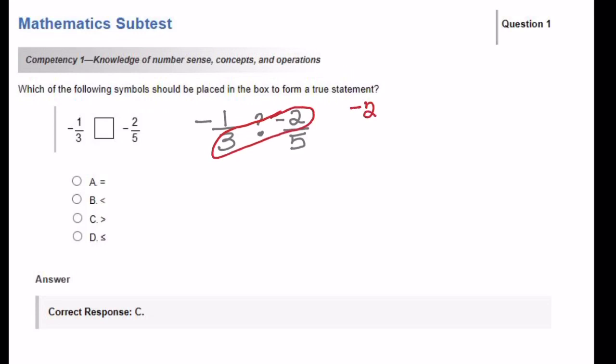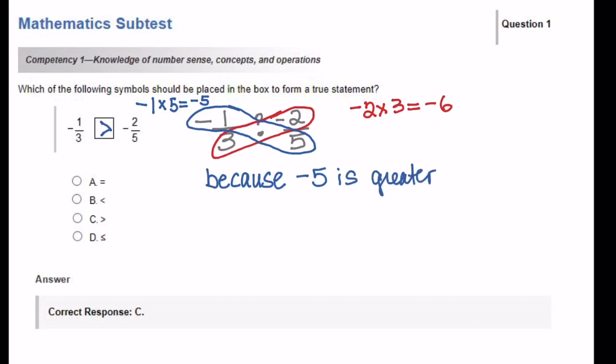So if I multiply negative 2 times 3, I get negative 6. And then I multiply negative 1 times 5, and I'm going to get negative 5. At this point, I can conclude that negative 1 third is larger than negative 2 fifths, and that's because the negative 5 is larger than the negative 6.